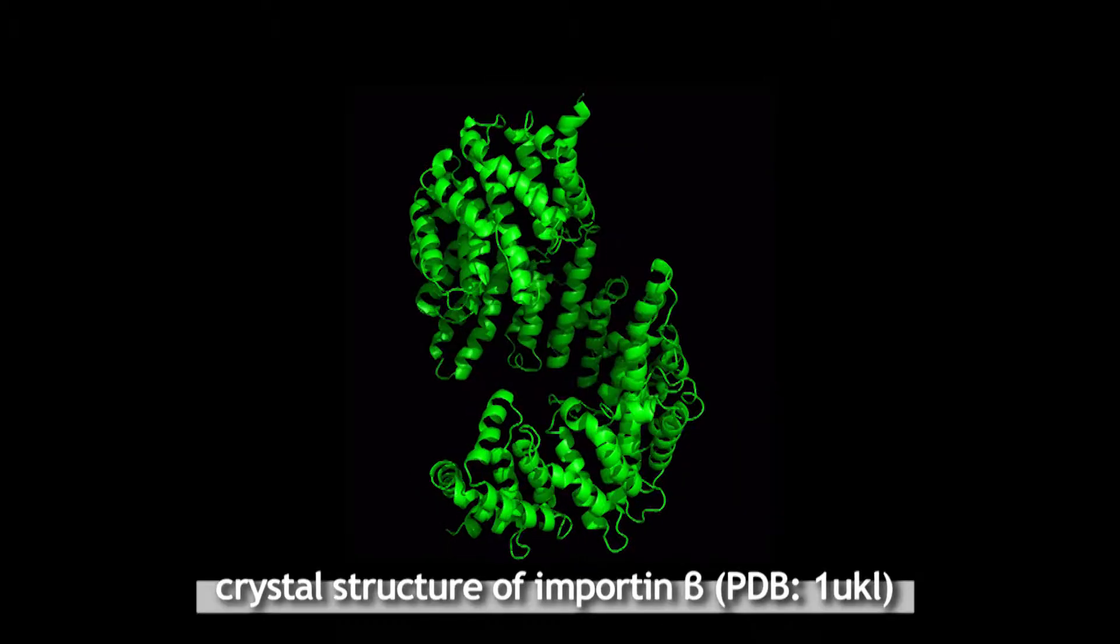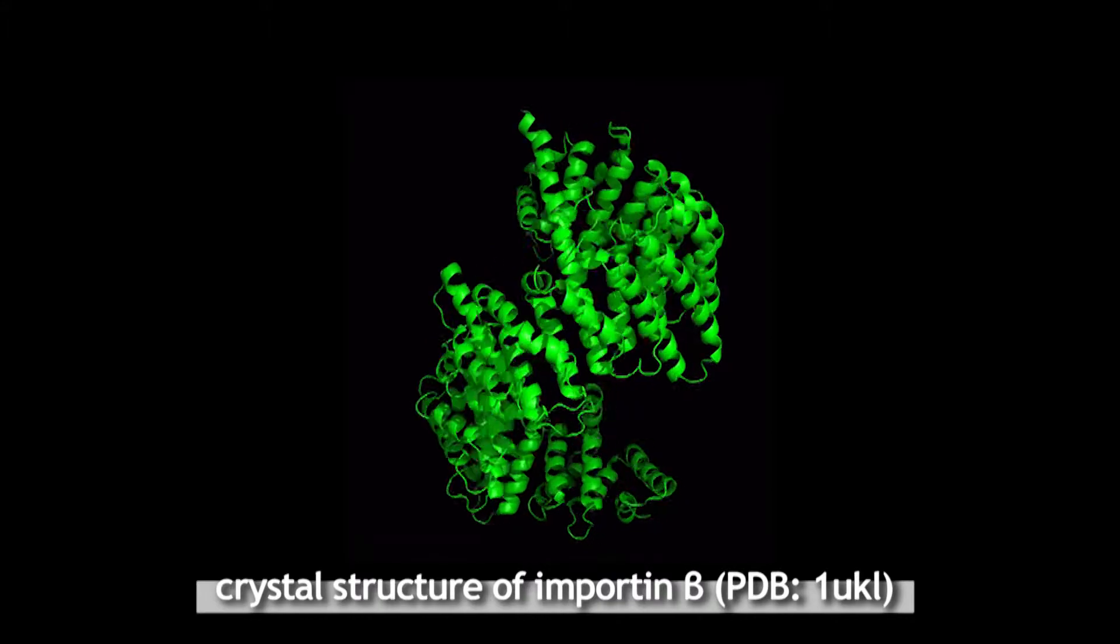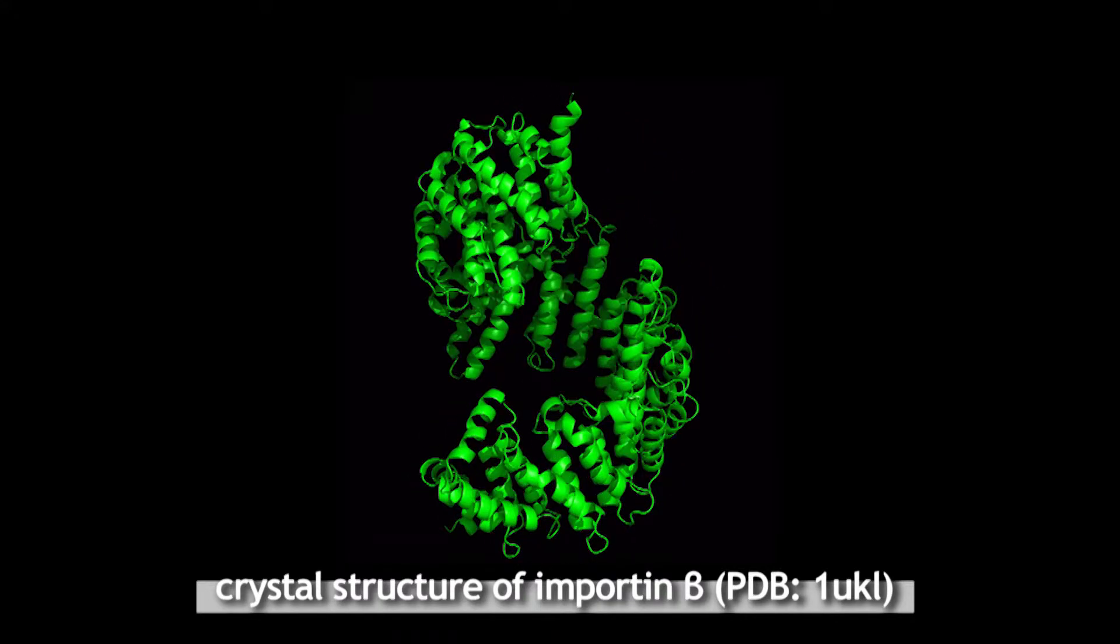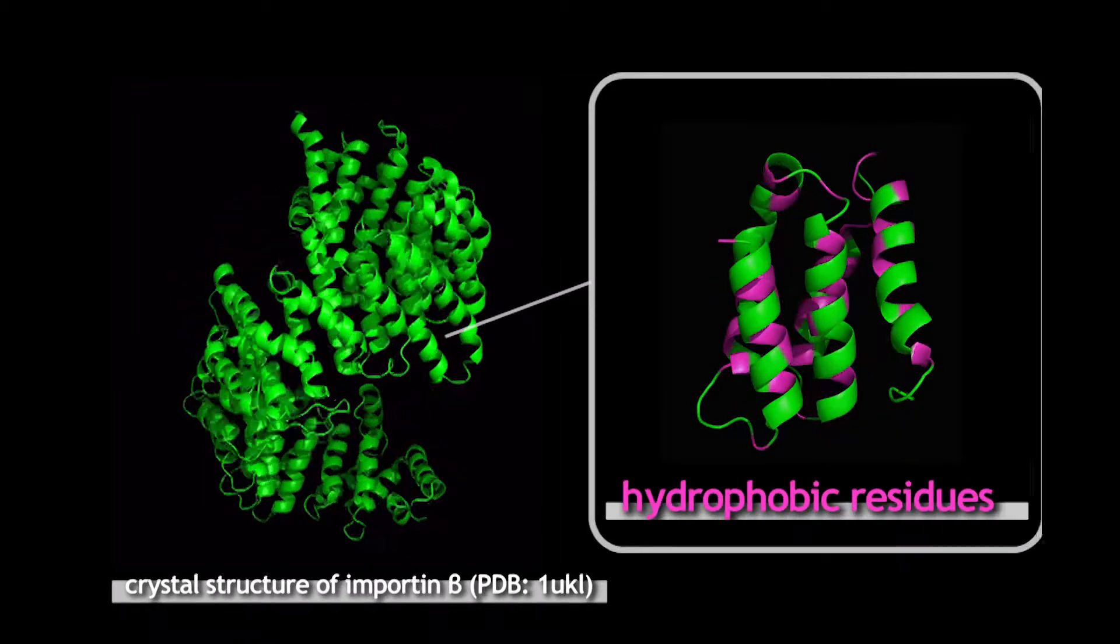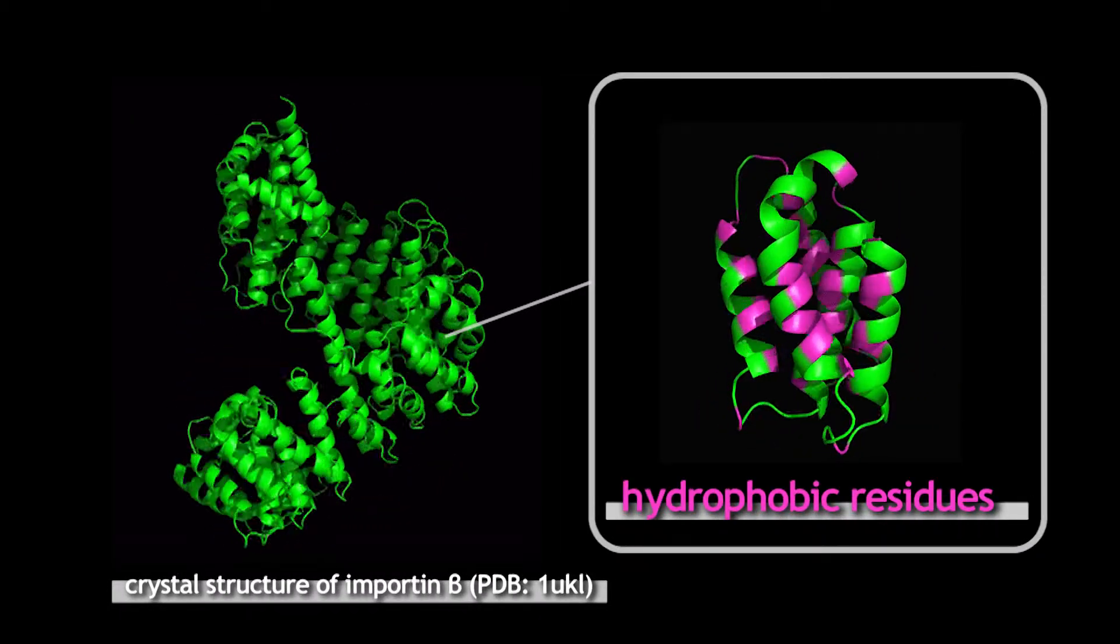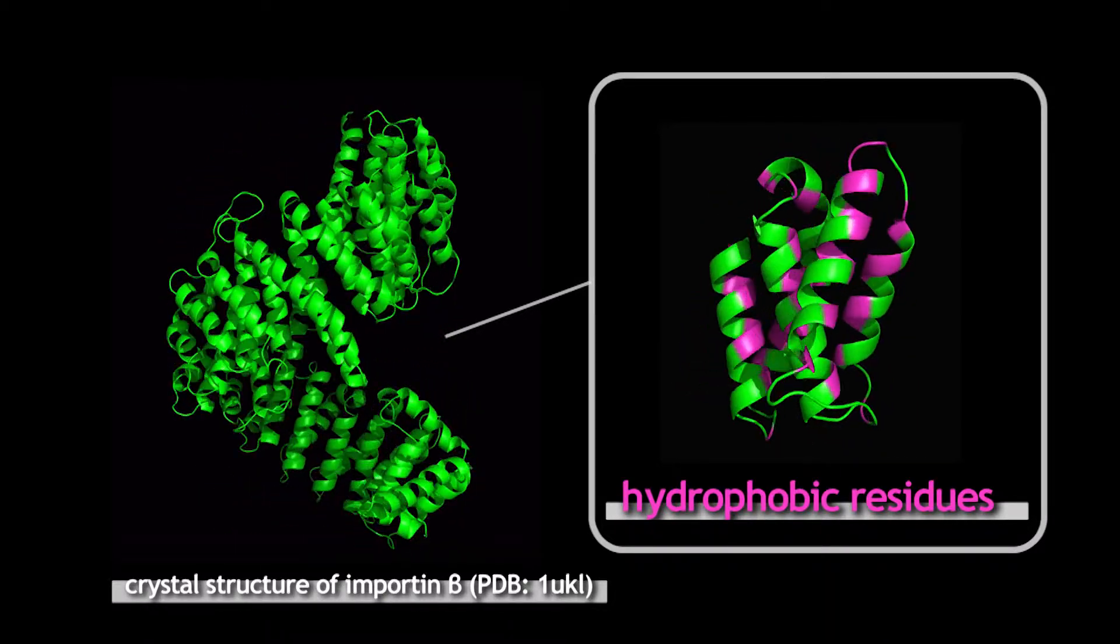This is a crystal structure of importin beta previously reported. It looks like a flexible spring with a number of alpha helices. These helices are all amphiphilic, which means it has both hydrophobic and hydrophilic faces on opposite sides of the cylinder.